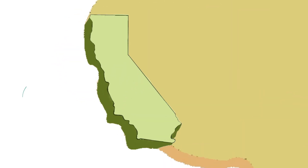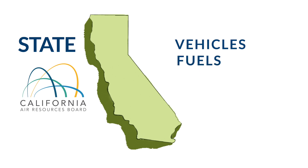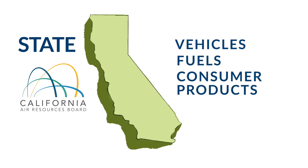At the state level, the California Air Resources Board focuses on California's unique air quality challenges by setting the state's own stricter emission standards for a range of statewide pollution sources, including vehicles, fuels, and consumer products.